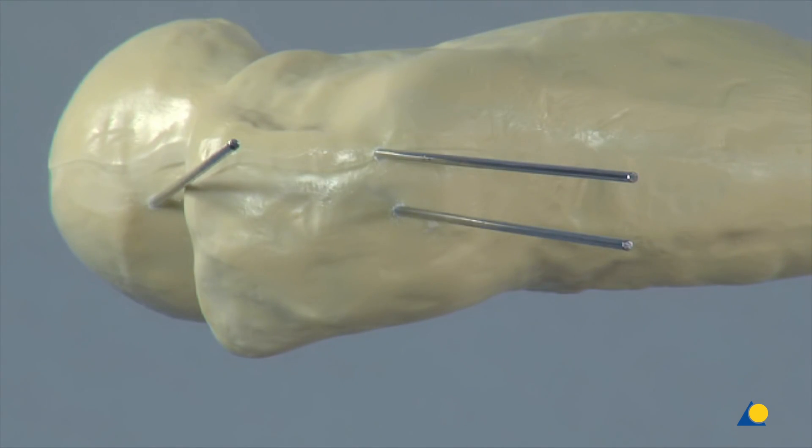In the AP plane, the second and third K-wires show the correction angle of 30 degrees relative to the first K-wire.